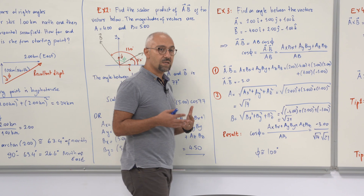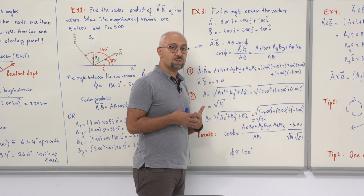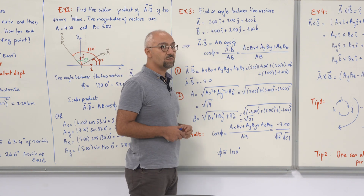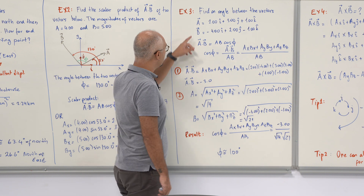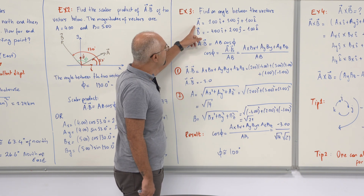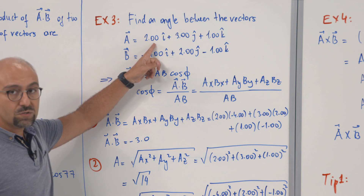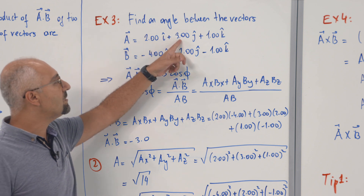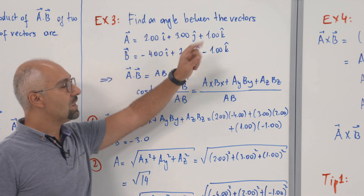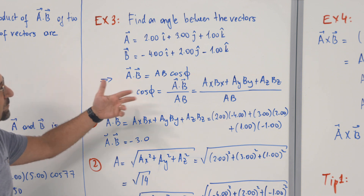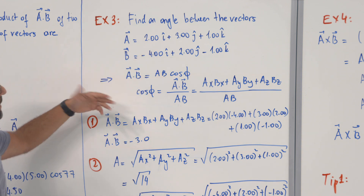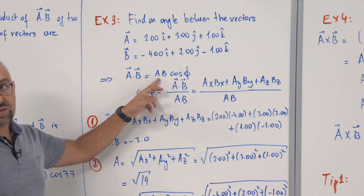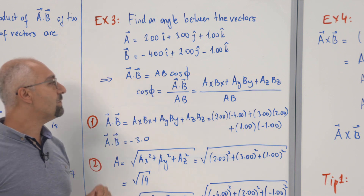The next example — important for exams — is finding the angle between two vectors given in component form. Vector A is 2.20i + 3.00j + 1k, and remember the significant figures. Applying the dot product rule: A·B equals the magnitude of A times B times cosine(phi), so cosine(phi) equals A·B divided by the product of their magnitudes.